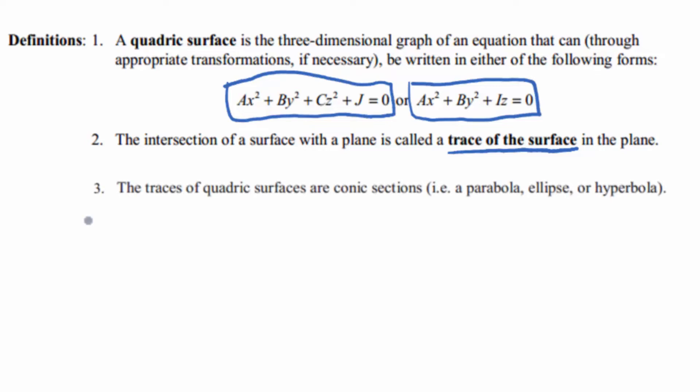Number three, the traces of quadric surfaces are conic sections: a parabola, an ellipse, or a hyperbola. So you need to know what those things are in the plane, so let me remind you.